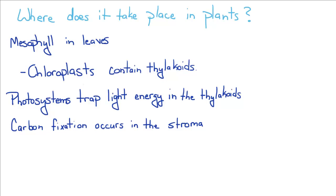Within these mesophyll there are structures called chloroplasts and these chloroplasts contain what are called thylakoids. They're just little flat membrane stacks. There are these things called photosystems that trap light energy in the thylakoids and then carbon fixation is going to occur in the stroma of the chloroplasts.